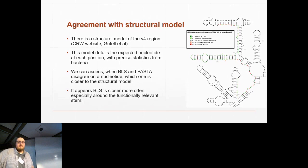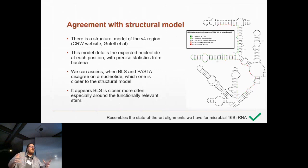So the changes added by the human players tend to be closer to the structural reality for this structured region. We're quite confident saying that the Borderline Science alignment at least resembles the state-of-the-art alignments we have for the microbial 16S ribosomal RNA.